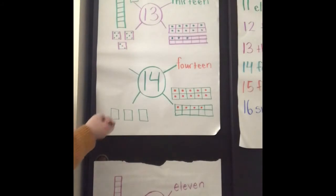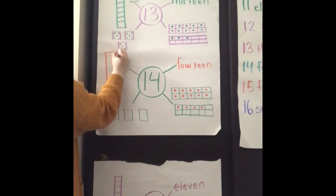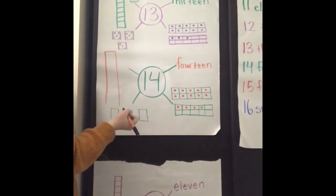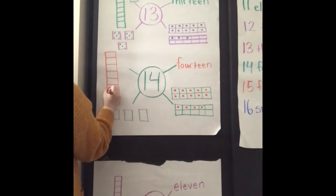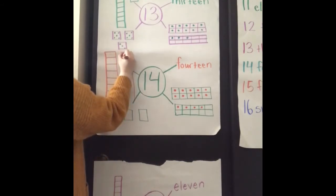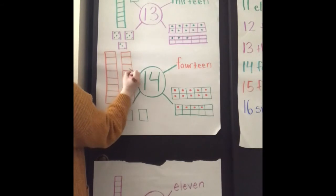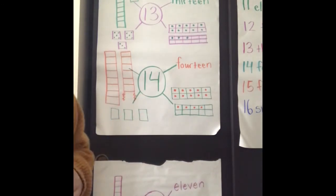Okay, now I'm going to make my linking cube train. It's going to be even longer. Count to 14 with me. 1, 2, 3, 4, 5, 6, 7, 8, 9, 10, 11, 12, 13, 14. So I don't need that extra. 14 linking cube squares.